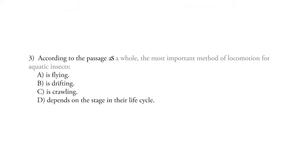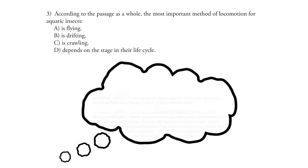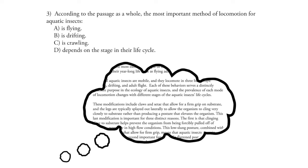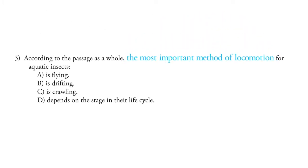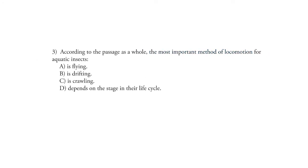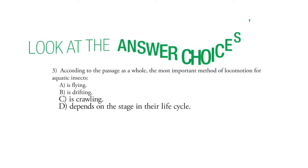According to the passage as a whole, the most important method of locomotion for aquatic insects. Well, first you may be thinking, I don't remember the author saying that one kind of motion was more important than another kind. So, this means we need to look at the answer choices first.